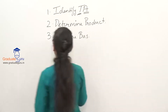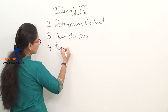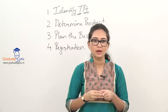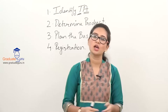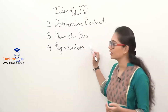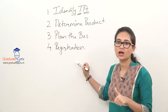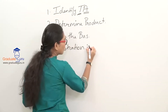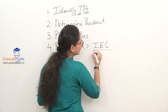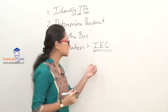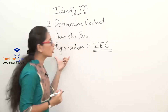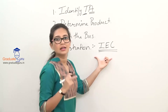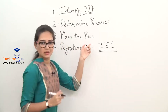The fourth step is to register yourself. Just like a person needs a name, a business also needs registration. Since we are talking about export marketing, there is a particular code called the IEC code — Import Export Code. You have to register yourself and get an IEC code number. Only then will you be a registered dealer and a registered business.